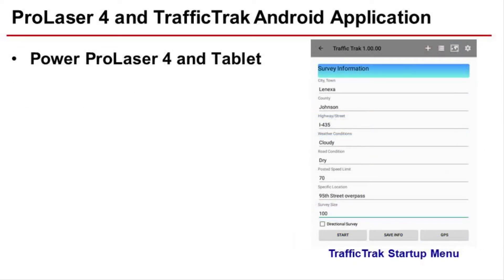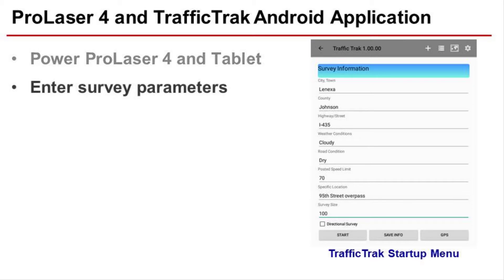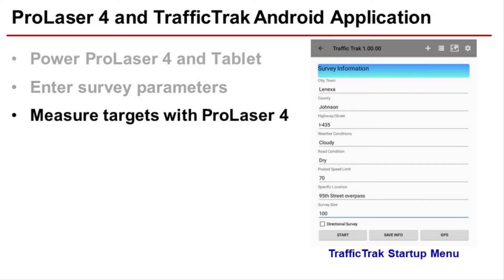To run a survey, power the ProLaser 4, the tablet, and start TrafficTrack. Enter the site description, choose the survey size and the target direction preferences. You may also load saved site information from past surveys. Press the Start Survey button to begin. The ProLaser 4 will pair with the tablet and you may begin targeting vehicles.